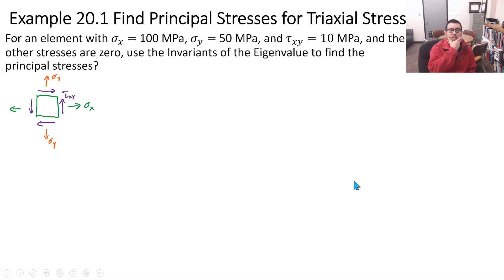Here's an example where we'll find the principal stresses for a condition of triaxial stress. This element is under a similar state of stress that we described in the last session. We have sigma x equals 100 megapascals, sigma y equals 50 megapascals, tau xy equals 10 megapascals. Not all the elements we dealt with in the last session have this state, but this is one of the states we looked at. I should say that the other stresses are zero.